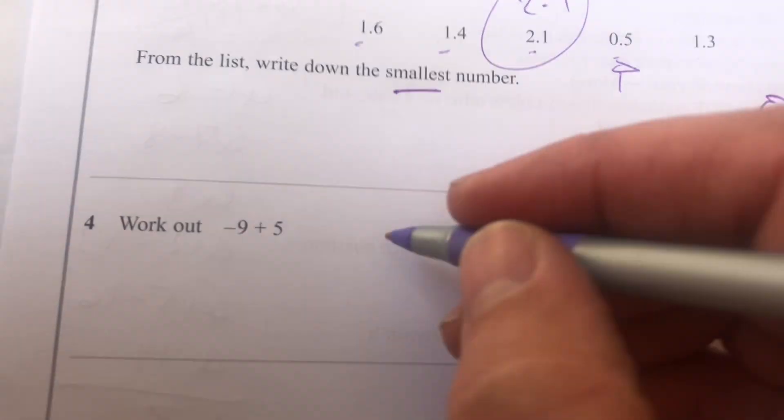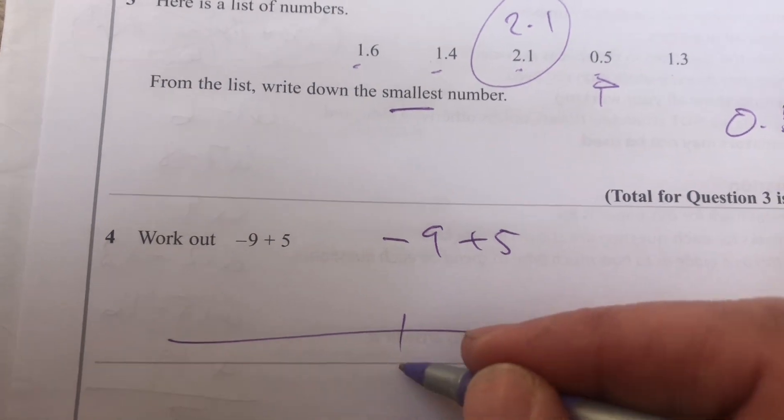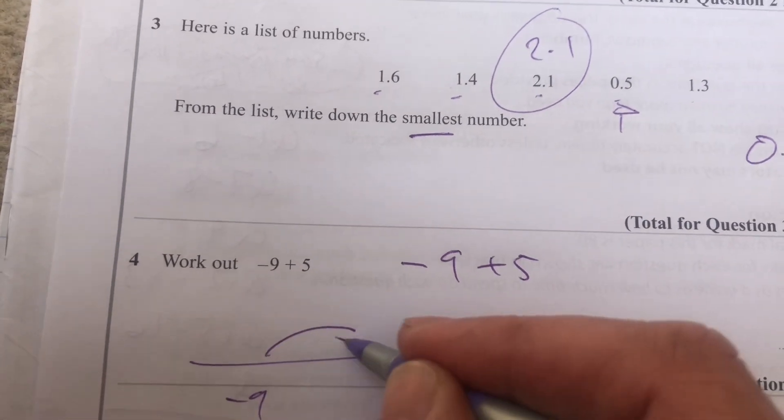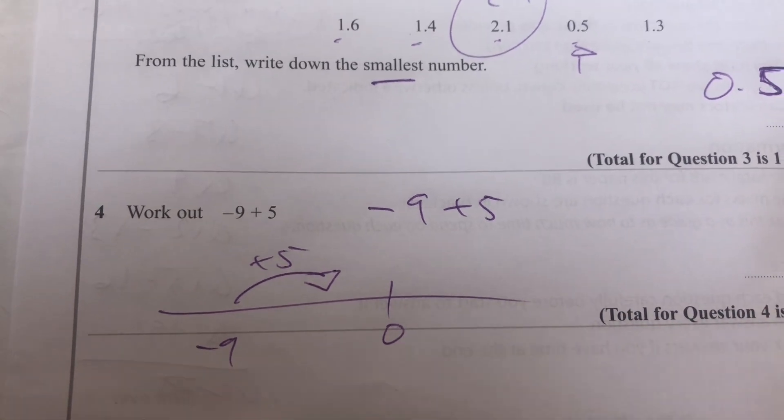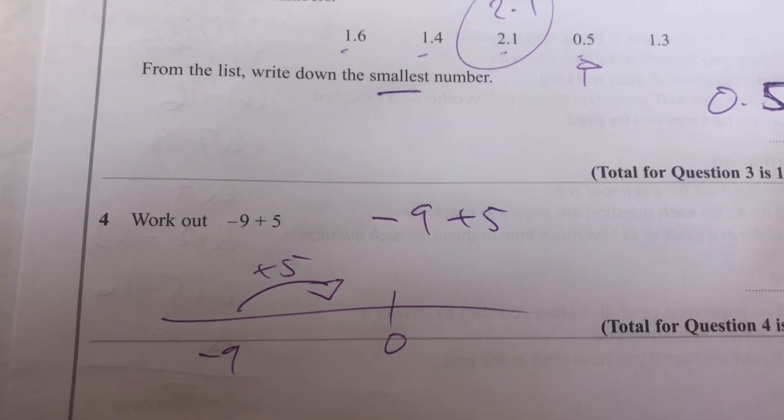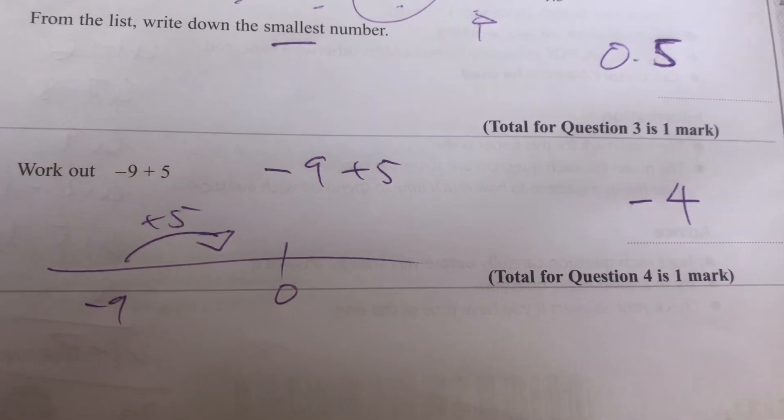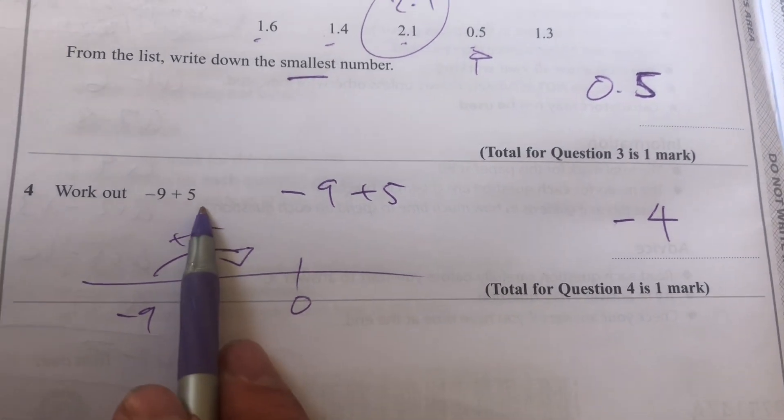Then work out -9 + 5. Think of the number line. There's 0, there's -9. Adding 5 means going that way: -8, -7, -6, -5, -4. So the answer is -4. You could have also thought about that as 5 - 9.